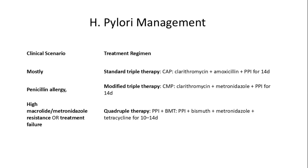For most patients, the first-line regimen is standard triple therapy — CAP: clarithromycin, amoxicillin, and a PPI for 14 days. If the patient has a penicillin allergy, switch to modified triple therapy — CMP: clarithromycin, metronidazole, and a PPI for 14 days.